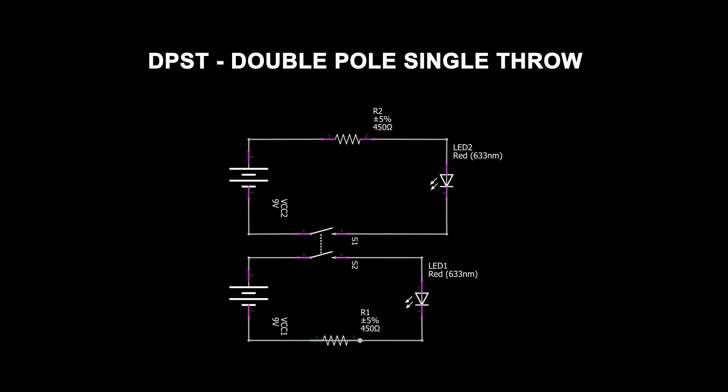Next is the double pole single throw switch, the DPST. It consists of four terminals: two input contacts and two output contacts, and it acts just like two parallel SPSTs next to each other. When you throw the switch both poles move at the same time, but there's no electrical connection between the two switches, so you can operate two separate circuits with this switch by pressing one button.